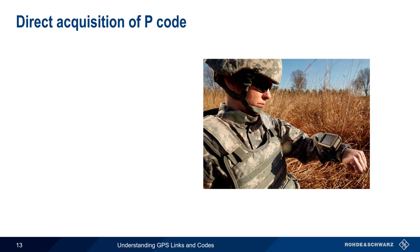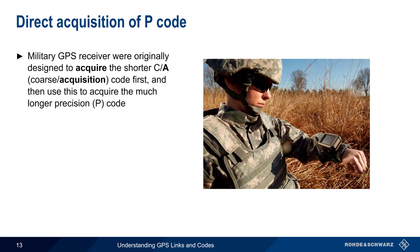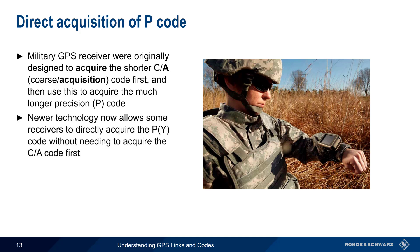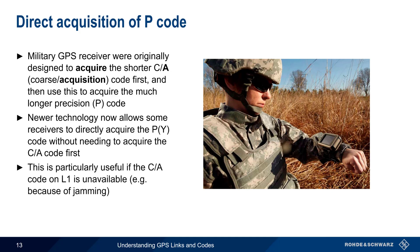You may recall that the A in CA codes stood for acquisition, because military PY receivers were originally designed to acquire the shorter CA code first, and then acquire the longer PY code. However, technology advances have made it possible for some receivers to directly acquire P code, without having to acquire the CA code first. This is useful when CA code is unavailable, for example due to jamming.